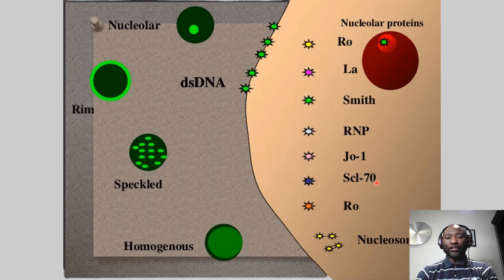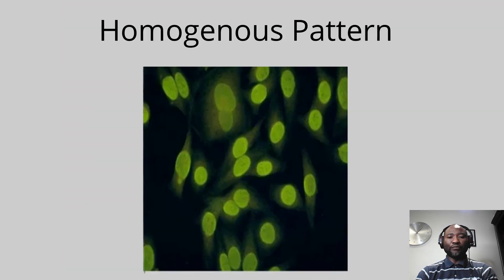SCL-70, also called topoisomerase I, may be found in systemic sclerosis. Antibodies to nucleosome can be found in cases of systemic lupus erythematosus. Bear that in mind with these antibodies, the antibody titers, and the patterns that have been mentioned.